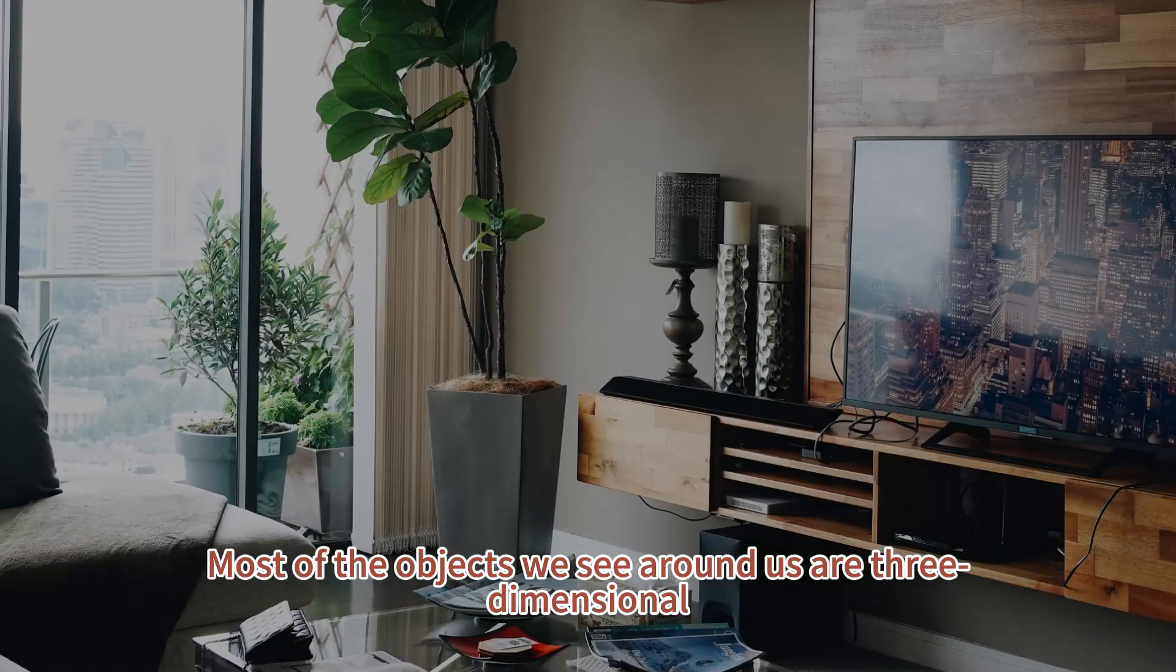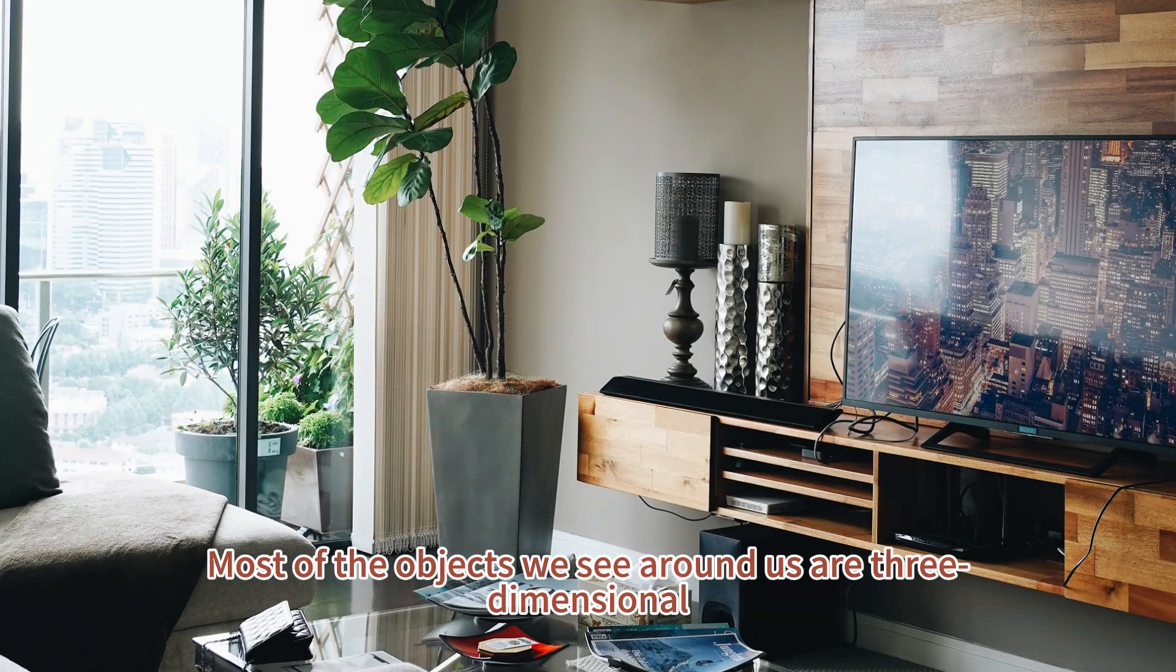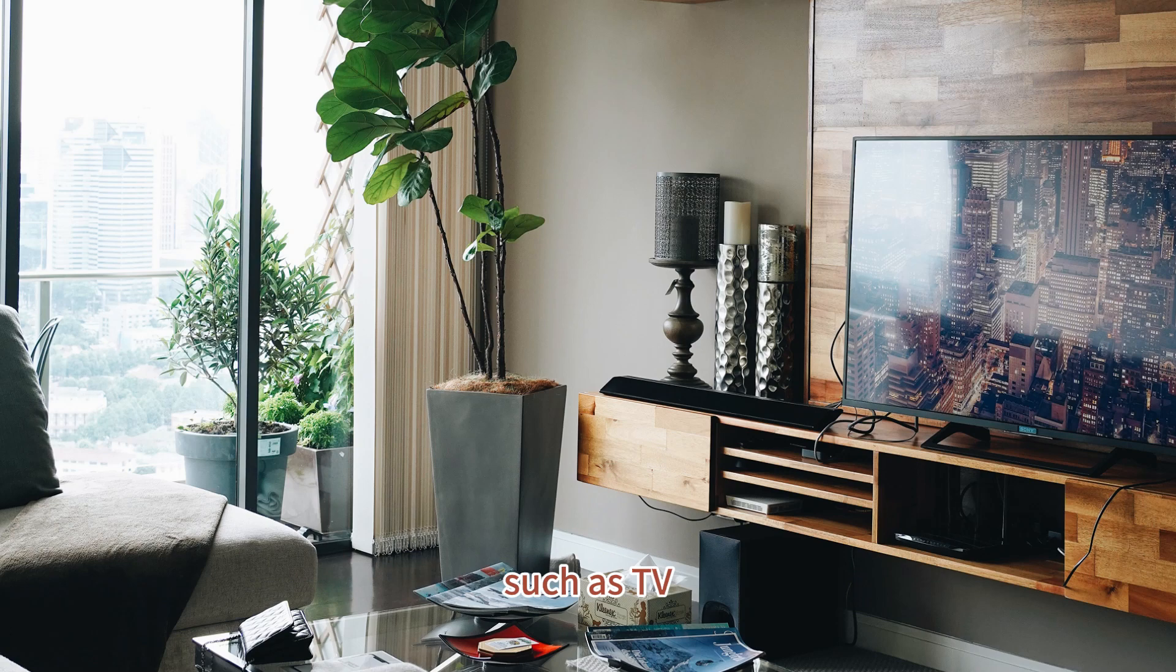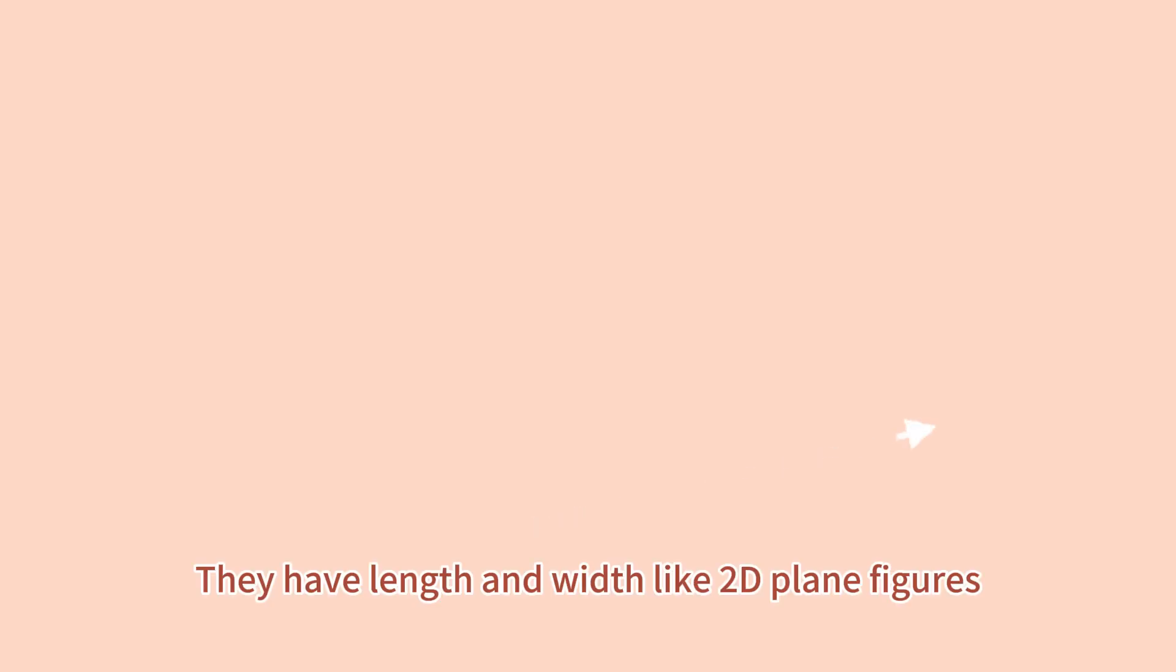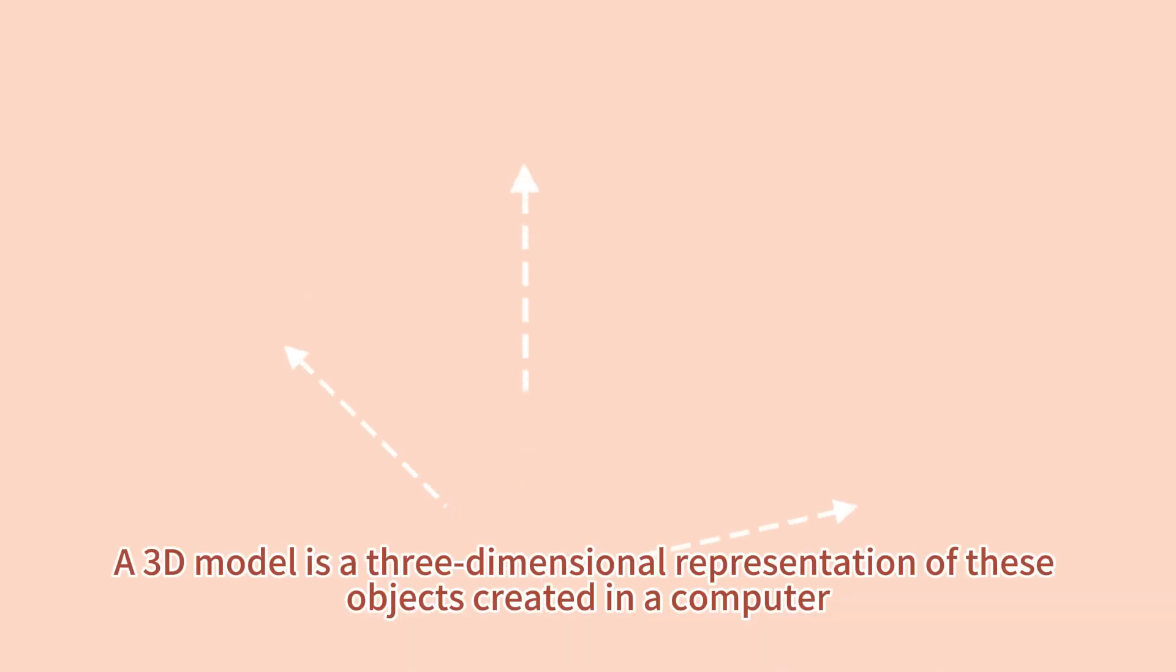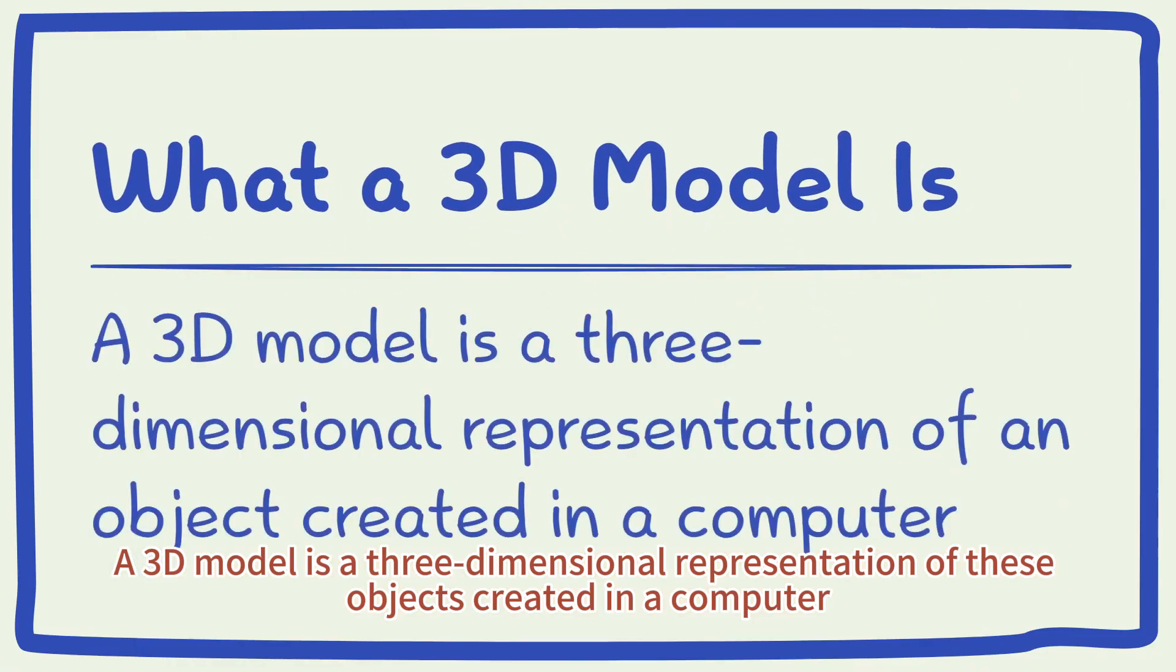Most of the objects we see around us are 3-dimensional, such as TV, lamp, plant pot, sofa, table. They have length and width like 2D plane figures, but they also have height. A 3D model is a 3-dimensional representation of these objects created in a computer.